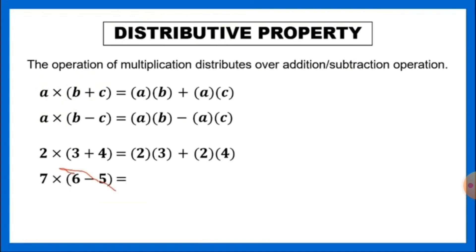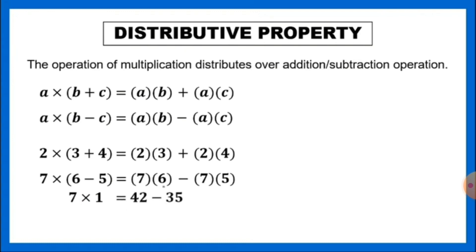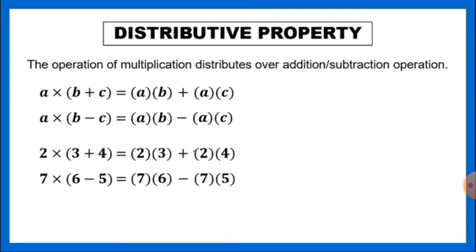Another example: 7 times the quantity (6 minus 5). We distribute 7 to 6 to get 7 times 6, and since subtraction is inside, we put minus, then 7 times 5. Using PEMDAS: 6 minus 5 is 1, and 7 times 1 is 7. On the right: 7 times 6 is 42, minus 7 times 5 which is 35, so 42 minus 35 equals 7. Still equal — applying distributive property gives the same result.